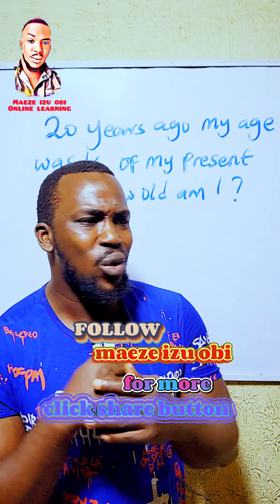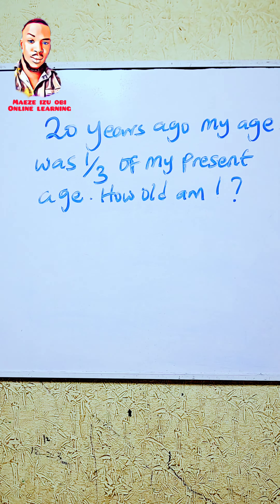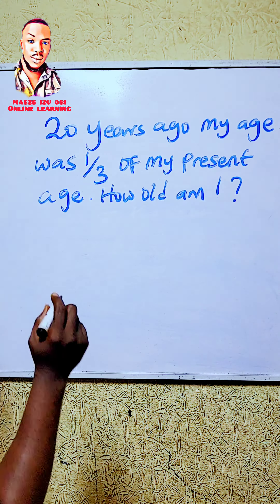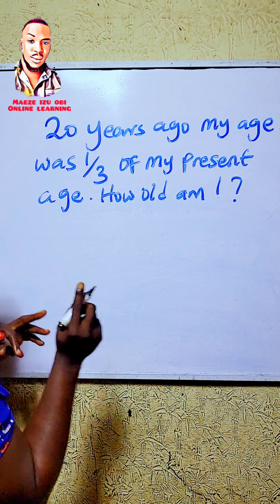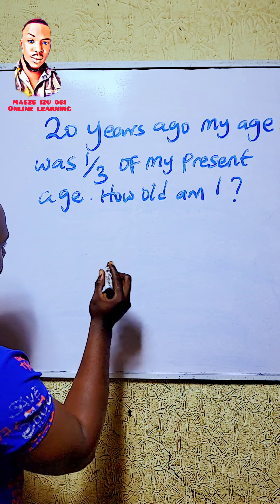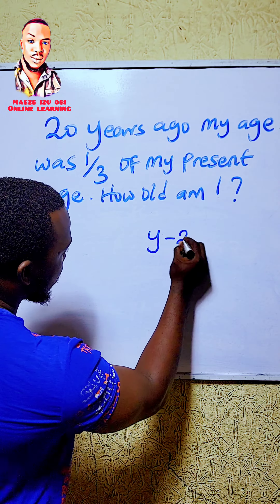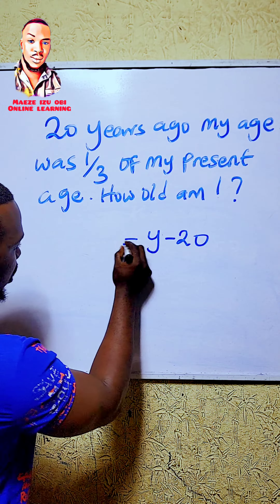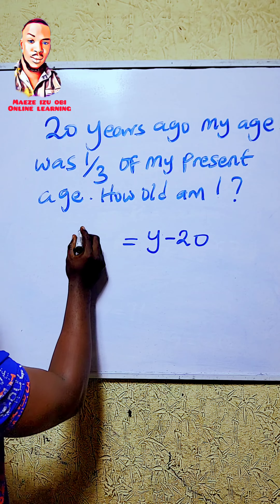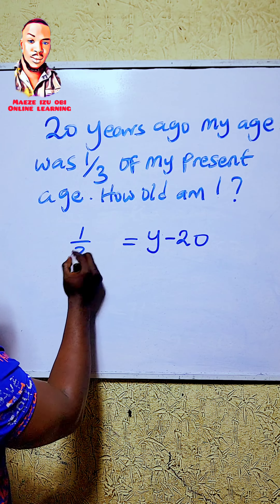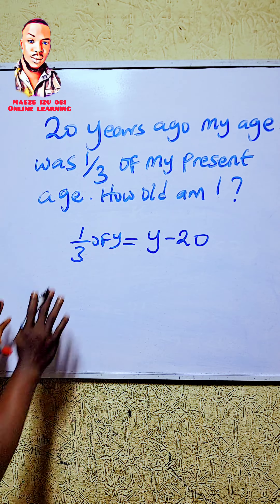First of all, they said 20 years ago, so: my age minus 20 is equal to one-third of my present age. Let y be my present age, so y minus 20 equals y over 3.